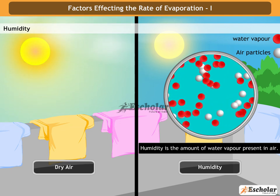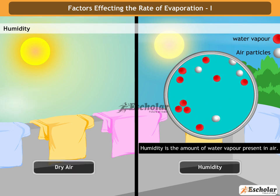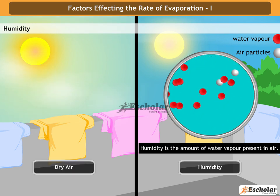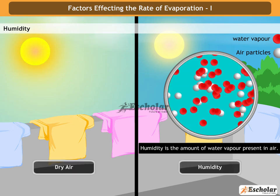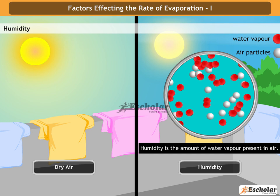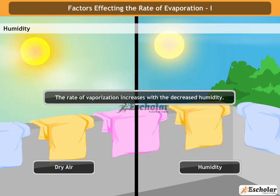Here you can see that wet clothes dry faster on a sunny day than in humid air, hence the rate of evaporation decreases. The rate of vaporization increases with decreased humidity.